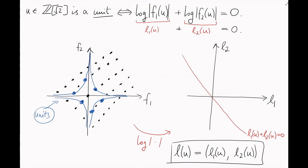Now, here's the space L1 plus L2 equals 0. It's just a line. And we've shown that if u is a unit, then L of u lies on this line. I'm going to call this line logarithm space, because L is a kind of logarithm map.